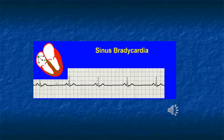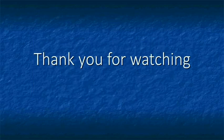Here the RR interval is prolonged. As you can see, there are about 36 small boxes. Therefore the heart rate is about 41 beats per minute. This is sinus bradycardia.